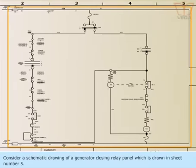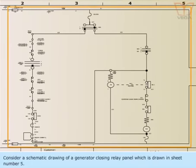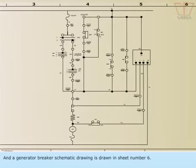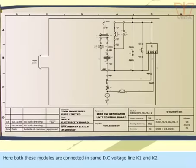Consider a schematic drawing of a generator closing relay panel, which is drawn in sheet number 5. Here, both these modules are connected in same DC voltage line, K1 and K2.